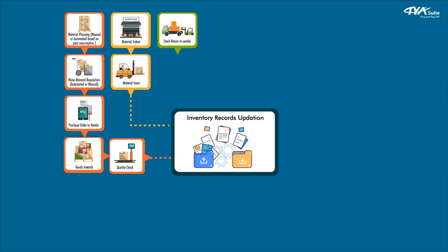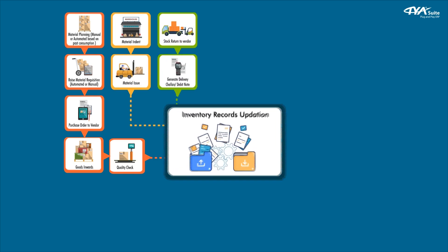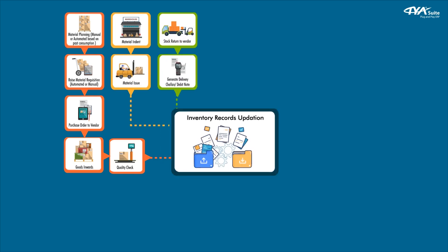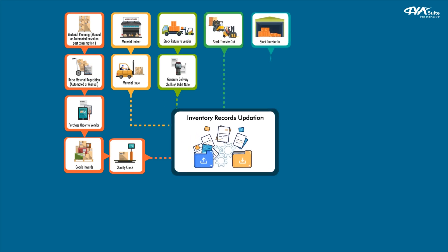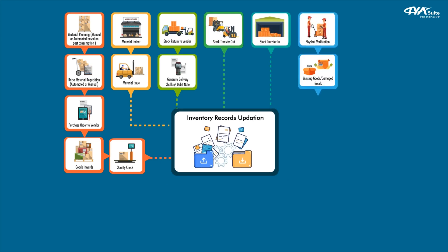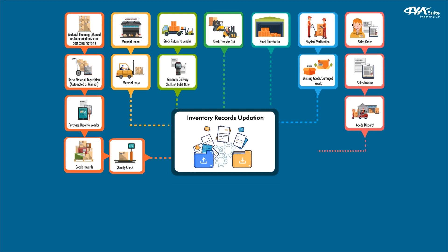Stock return to vendor. Generate delivery challan debit note. Inventory records updation. Stock transfer out. Inventory records updation. Stock transfer in. Inventory records updation. Physical verification — missing goods, damaged goods. Inventory records updation. Sales order. Sales invoice. Goods dispatch. Inventory records updation.